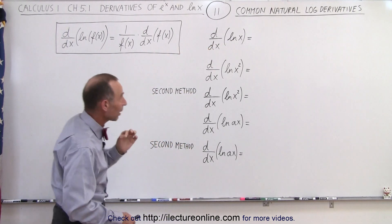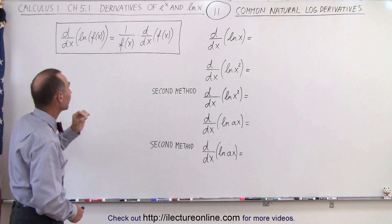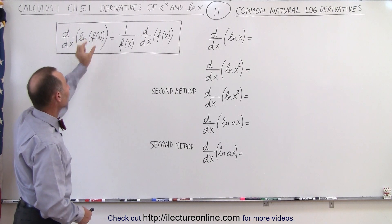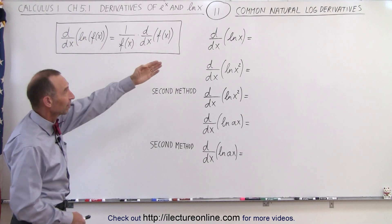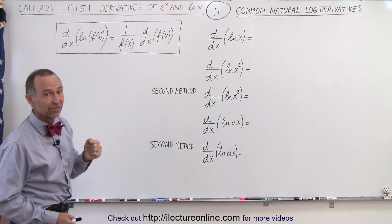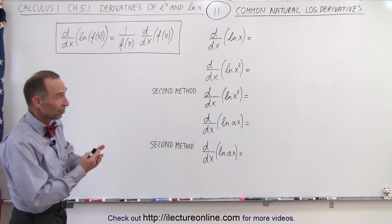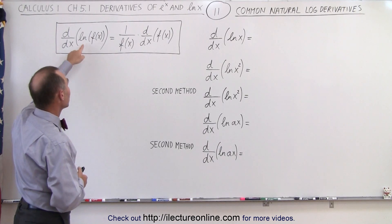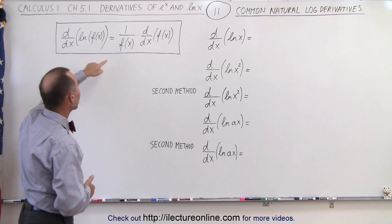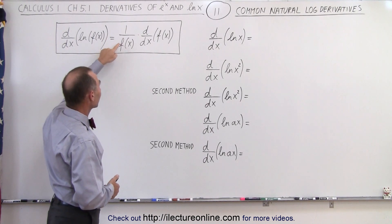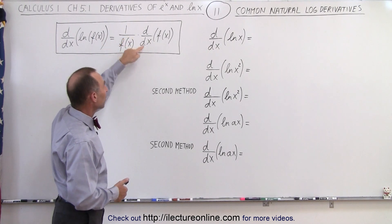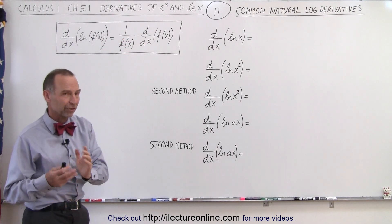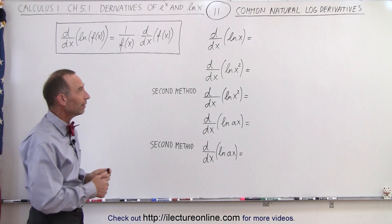The proper way of handling that is to say we have the natural log of some function of x. In this case, for the first example, that function is simply x. The way you do that is you write it as 1 over the function of x, times the derivative of that function of x.